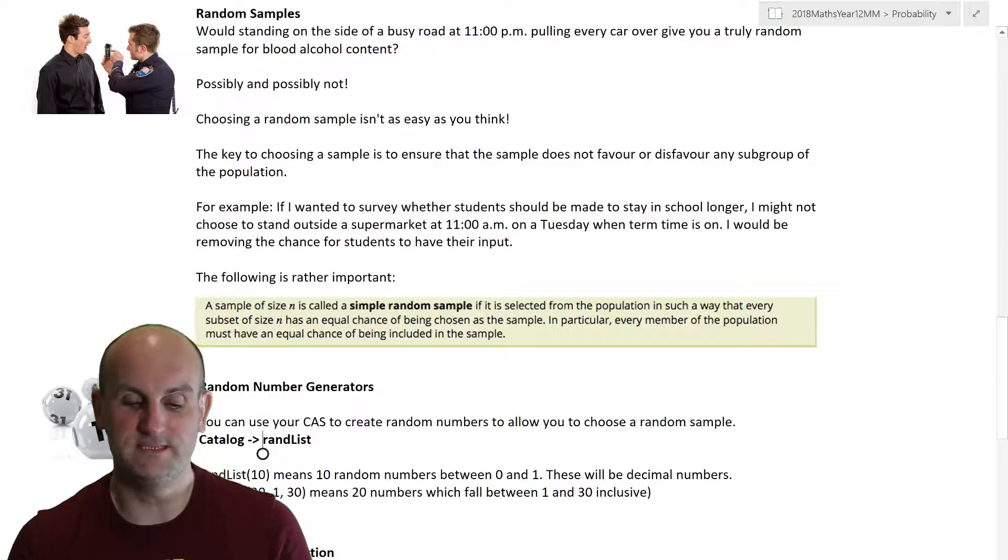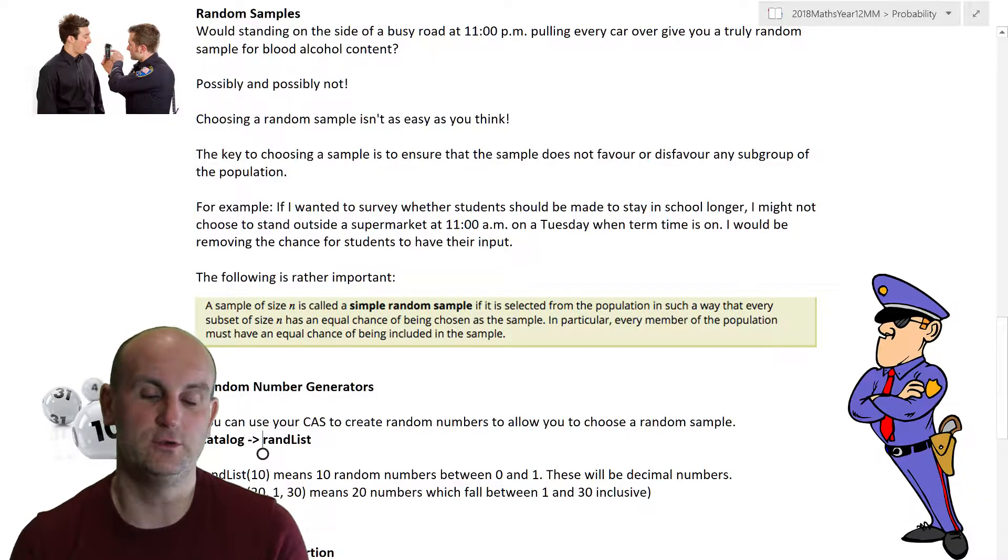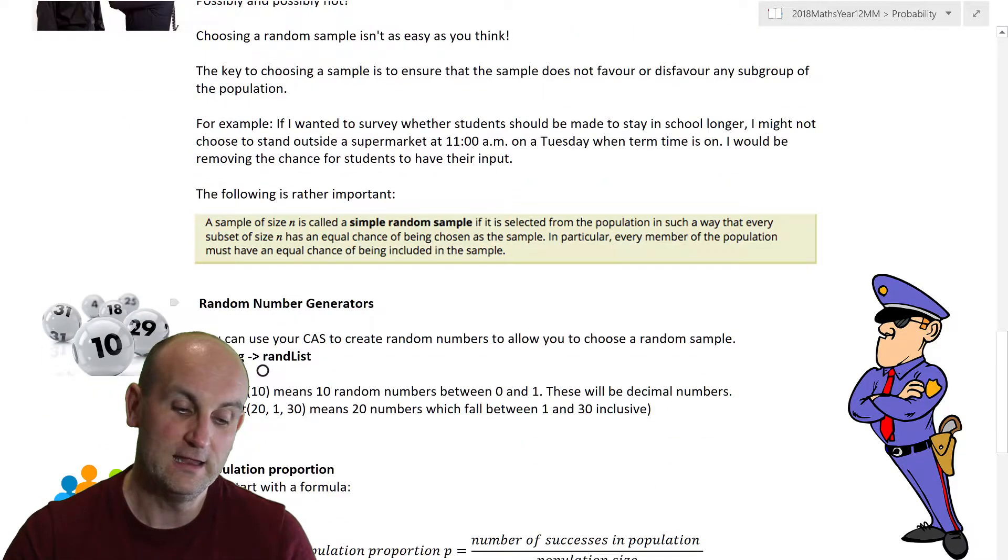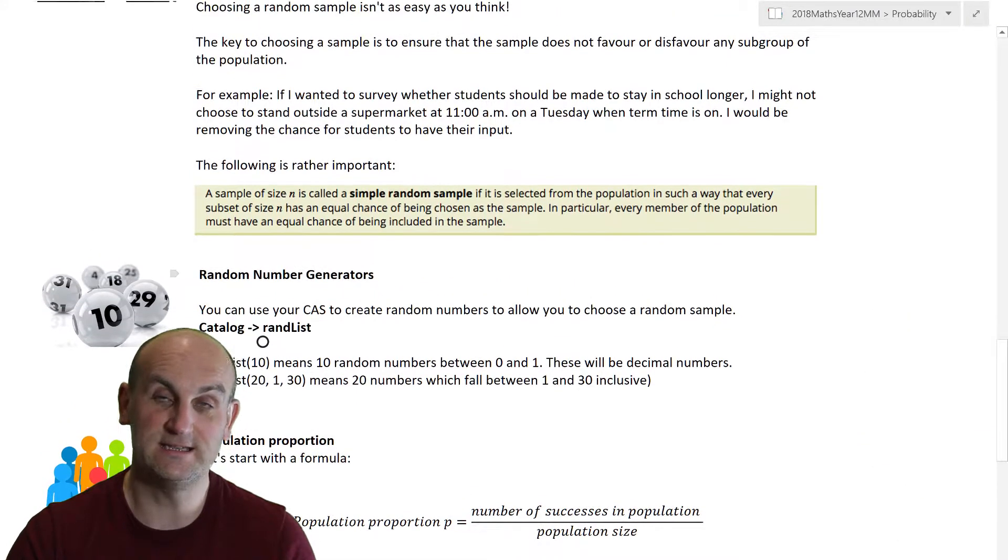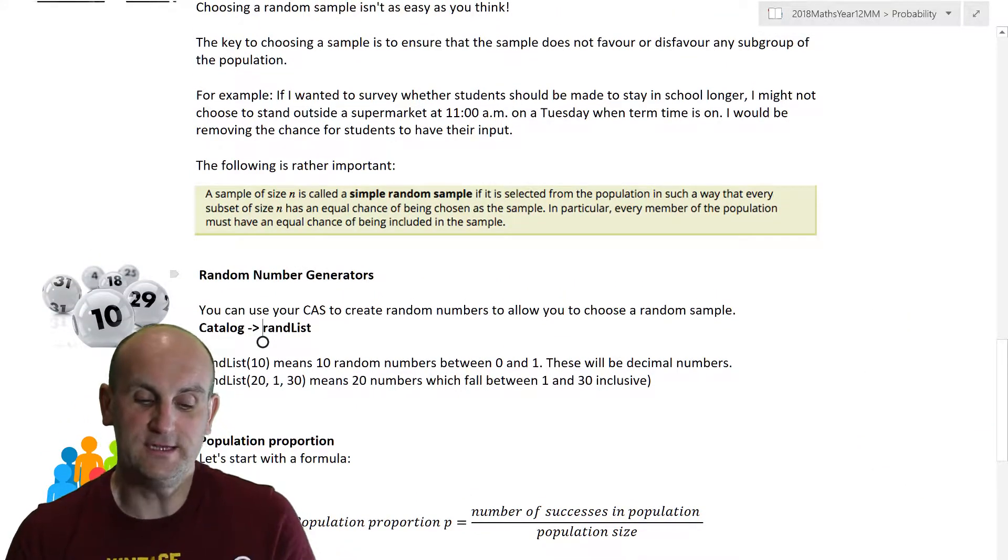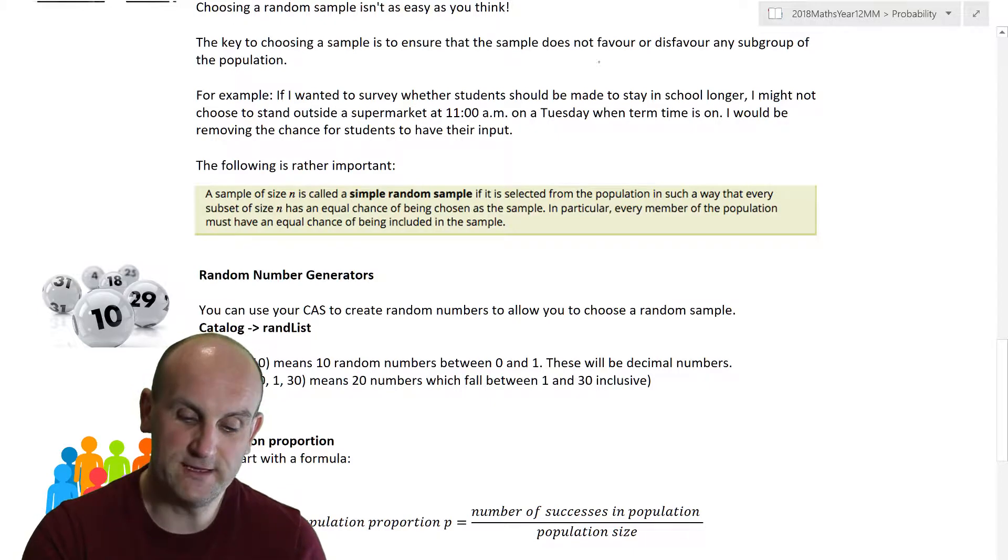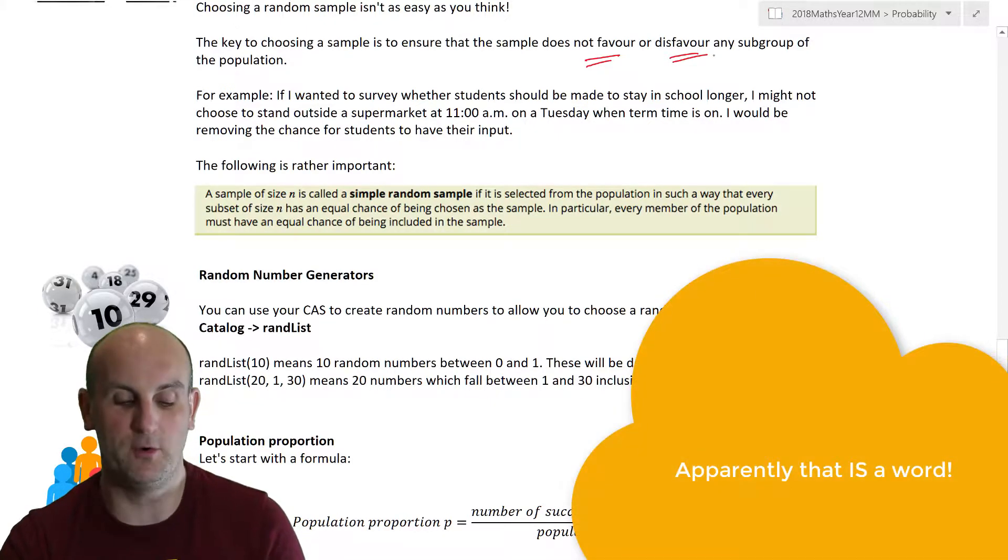If, for example, they invited in a load of year six students, all from Melbourne, then it's not actually random. Now you might turn and say, well, they randomly chose a school. That's not realistically a truly random sample. Which brings me to the idea of random samples. Would standing on the side of a busy road at 11 p.m. in the city, pulling over every other car, give you a truly random sample for blood alcohol content? Possibly not. 11 p.m. just so happens to be when the pubs are throwing out, and so the chances are you're aiming to try and catch people. So it's not truly random.